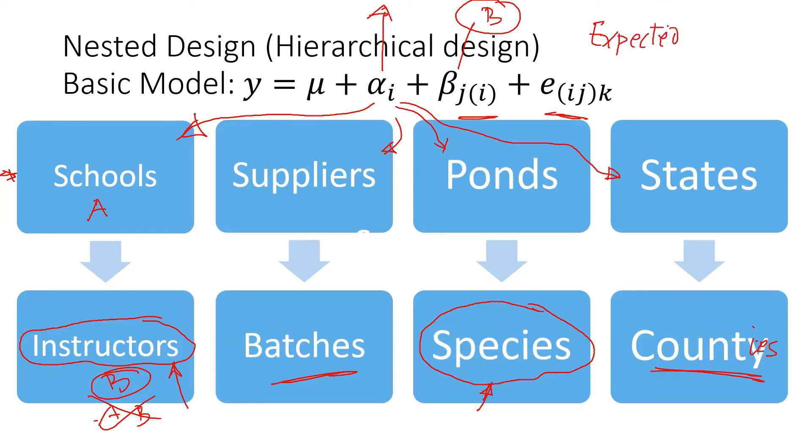We need to find that expected mean square to do the correct F statistics. Check my other videos on expected mean square to see how to calculate and get the correct F statistics, which is very simple as soon as you know whether factor A is random or fixed. A is typically fixed—maybe we're testing only five schools or we have three suppliers, or we are testing only five ponds. States, if you are interested in the entire United States and want to generalize the conclusion, you randomly pick a few states; this could be random as well. Or if you're only interested in two states, then it's fixed. We know how to determine random or fixed, and then we can find the expected mean square and find the appropriate F statistics.